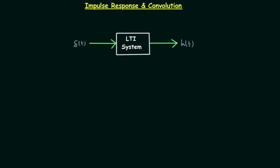Everything is hidden in the name itself — the response of the system when an impulse is applied to the system. So unit impulse is the input to our LTI system and the response, which is the output, is the unit impulse response, or simply the impulse response. The impulse response is fixed for the given LTI system, and this is the reason we use impulse response to define the LTI system.